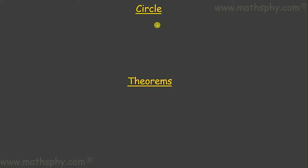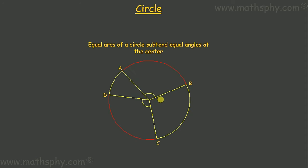We have already studied about the terminologies involved in the circle. Now it's time to study about the theorems. The very first theorem is: equal arcs of a circle subtend equal angles at the center.